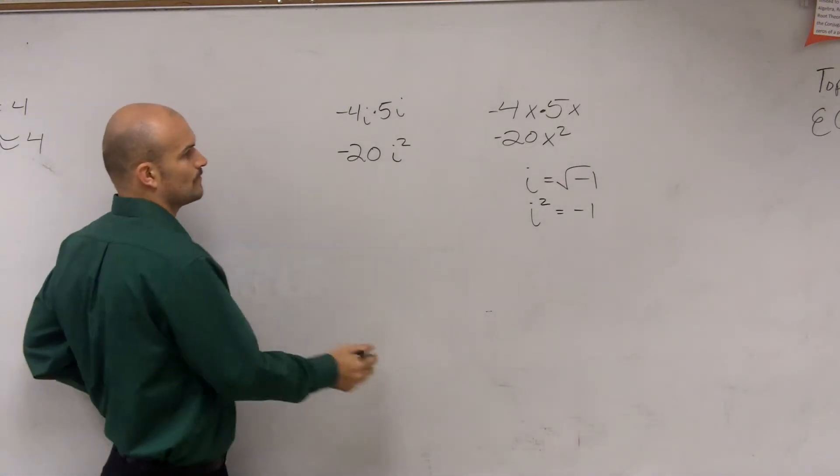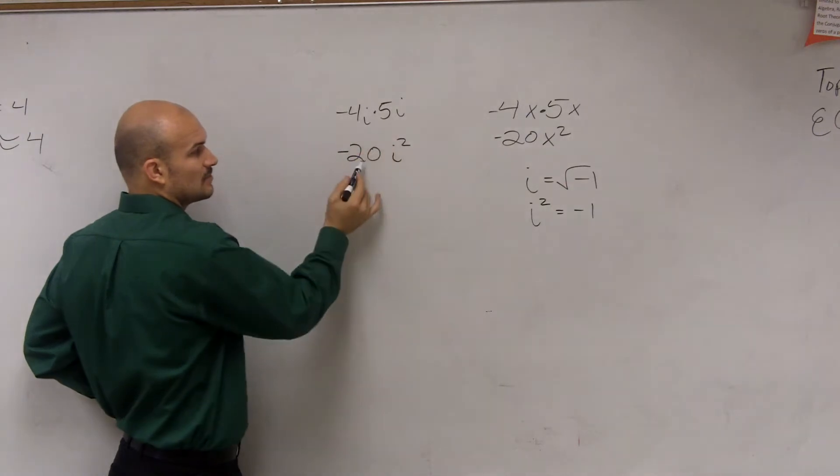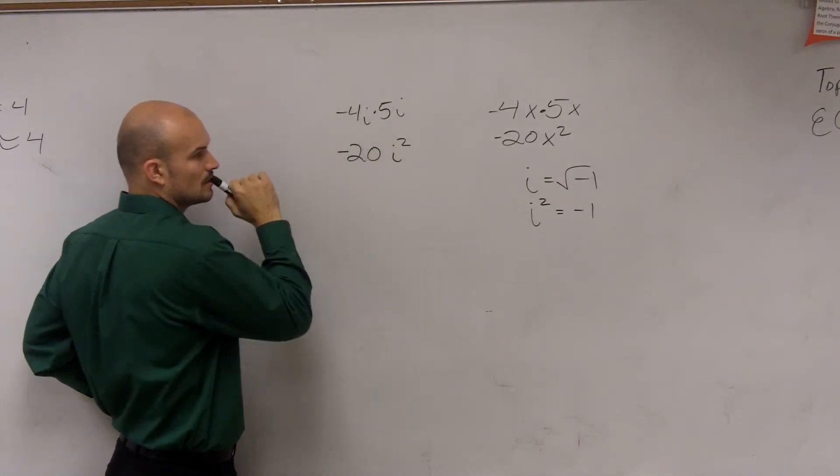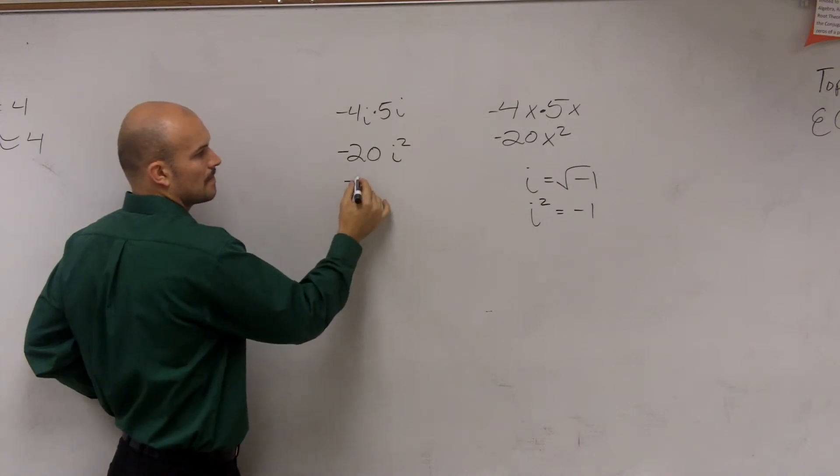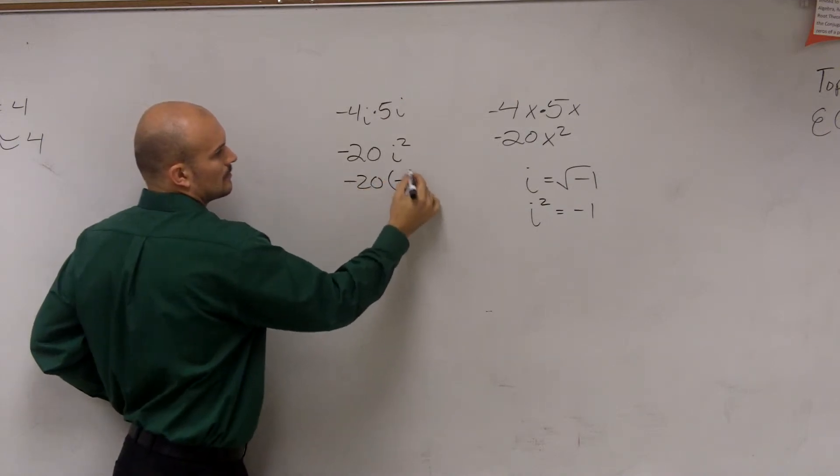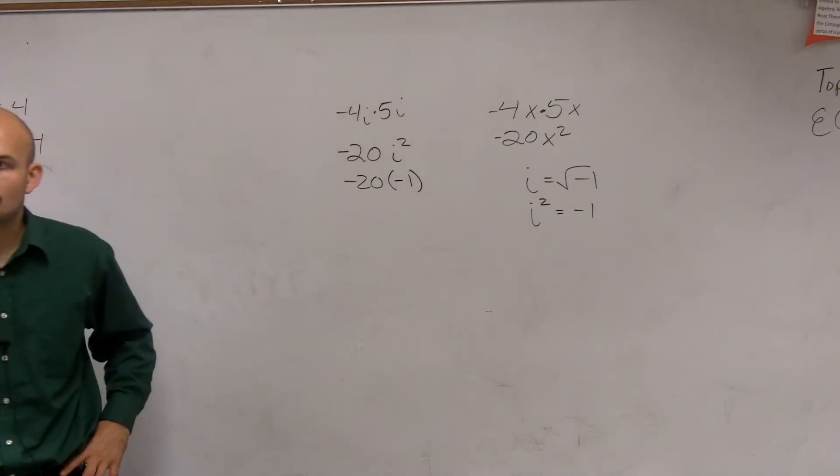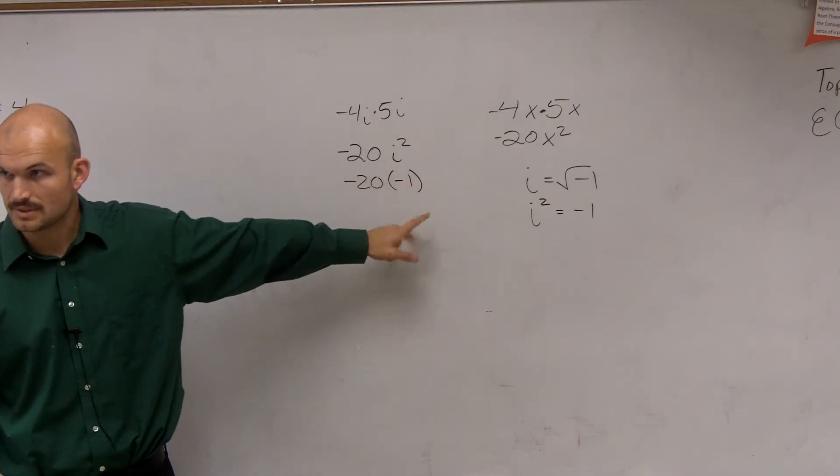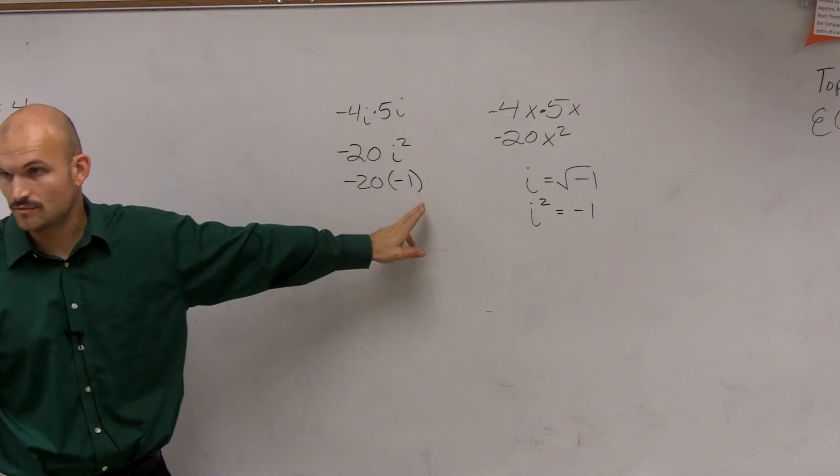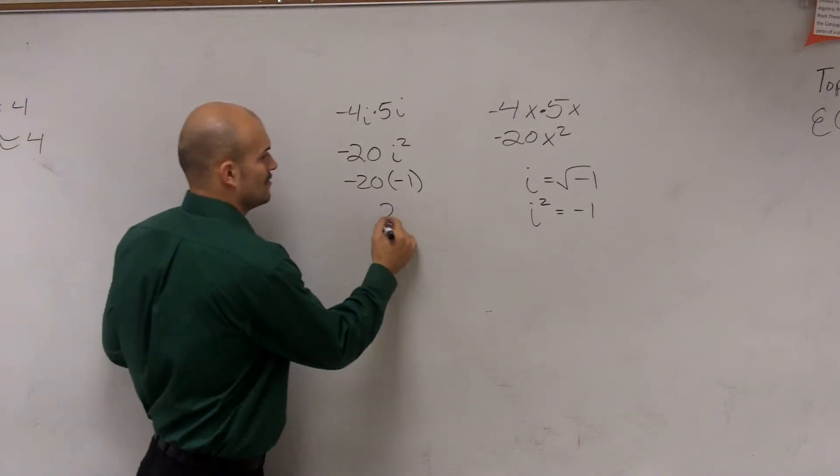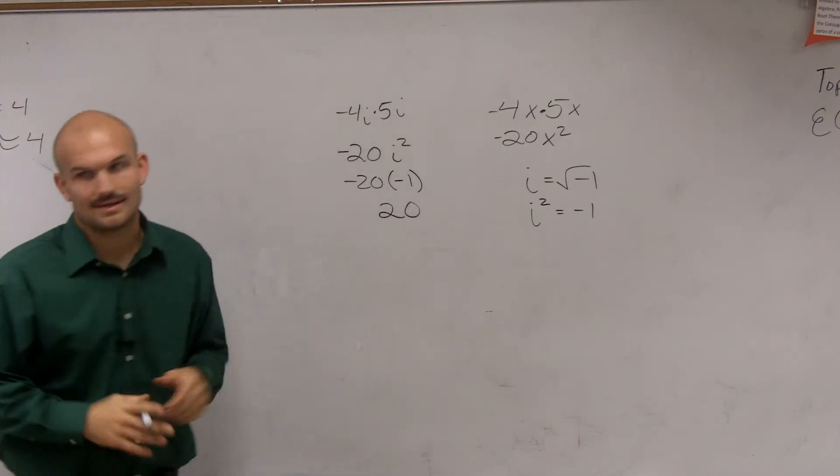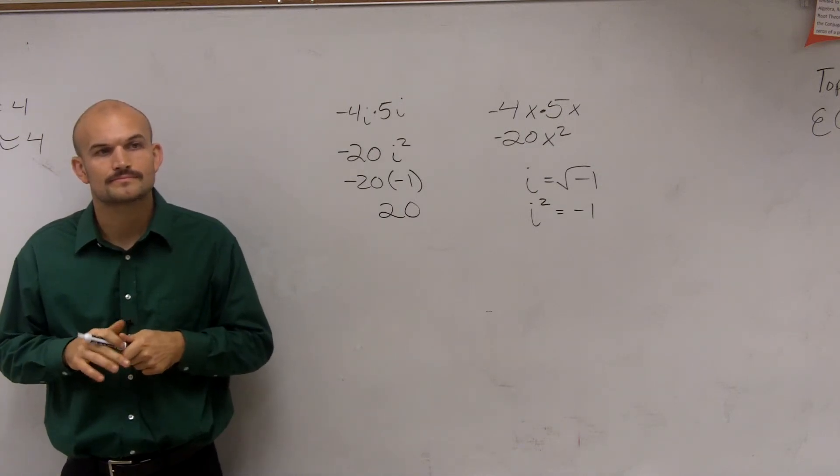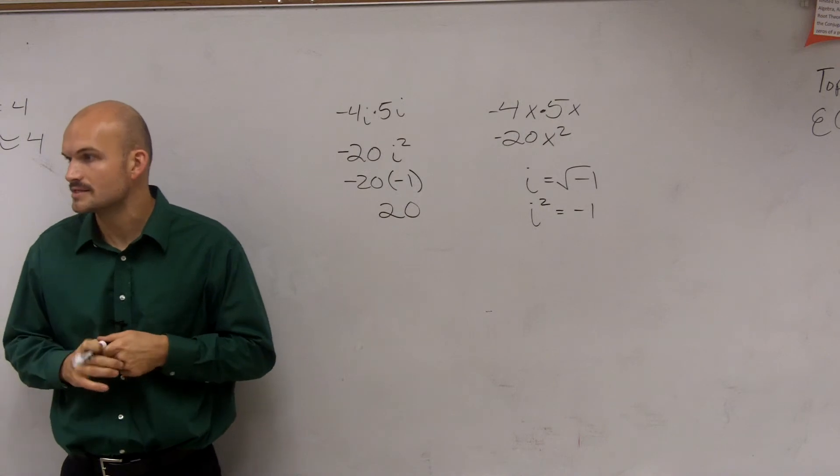So you get negative 20. So then what I write it as is negative 20 times negative 1. Negative 20 times negative 1 is now going to give you positive 20, right? And that's why your answer is positive.